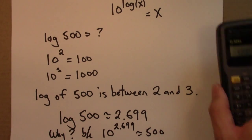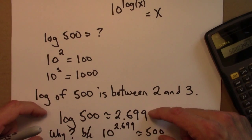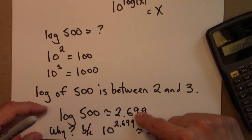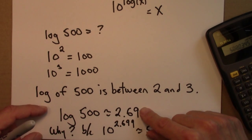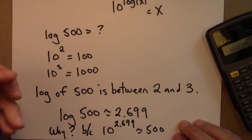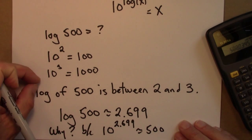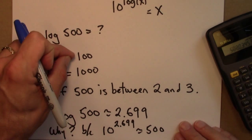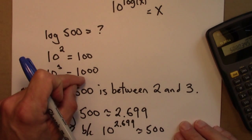So this down here, you would need a calculator to do, to figure out an exact value or a closer to exact value. But without a calculator, you should be able to know that log 500 is between 2 and 3, because 10 to the 2 is 100 and 10 to the 3 is 1,000.